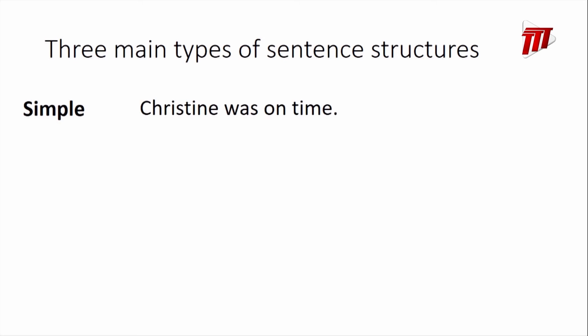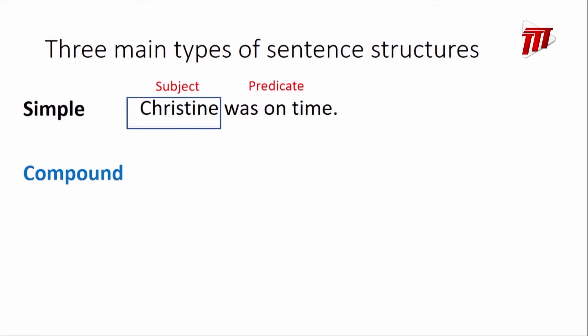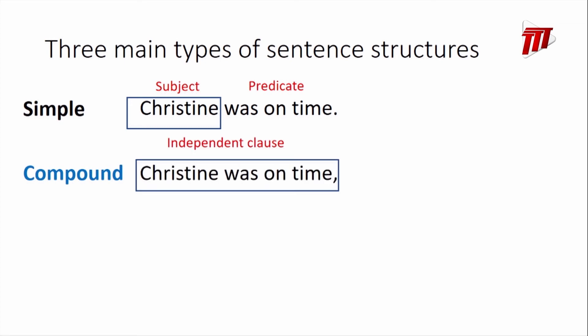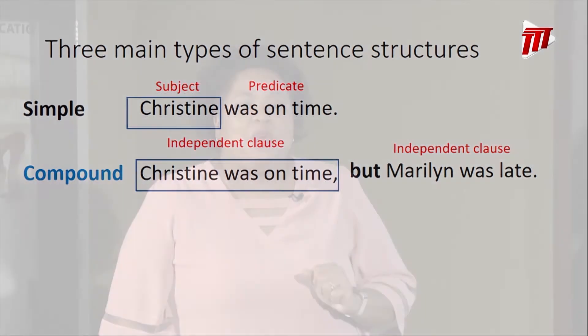You know what a simple sentence is — for example, 'Christine was on time.' It has a subject and a predicate; it's an independent clause that stands on its own. You know what a compound sentence is: 'Christine was on time, but Marilyn was late.' A compound sentence is two independent clauses joined by a conjunction. 'Christine was on time' is one independent clause, 'Marilyn was late' is another, and the coordinating conjunction 'but' joins them.